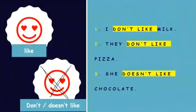Now let's look at some negative examples: I don't like milk, they don't like pizza, she doesn't like chocolate. The verb 'to like' is not alone — we have two elements. The first element, 'don't', is called an auxiliary. To form a negative sentence in English, you use the auxiliary 'don't' or 'doesn't' according to the subject. The structure is: subject + auxiliary + verb + object.